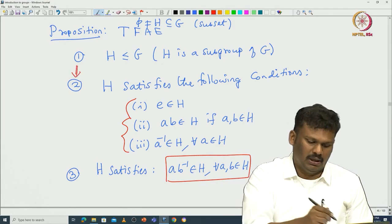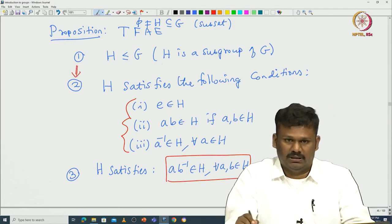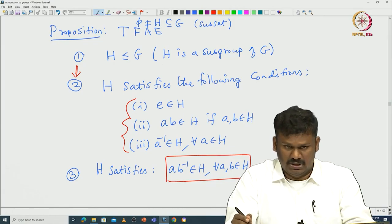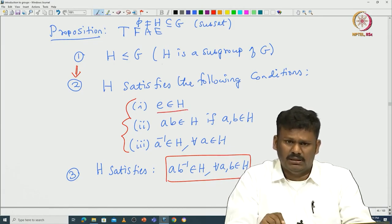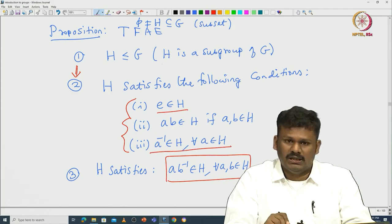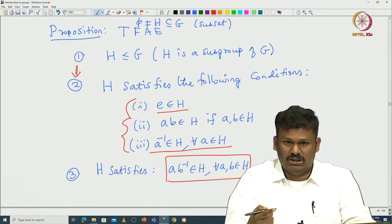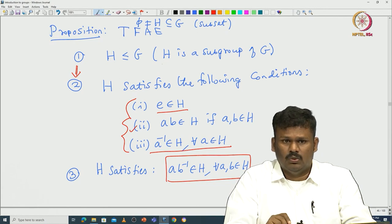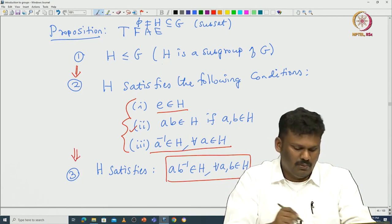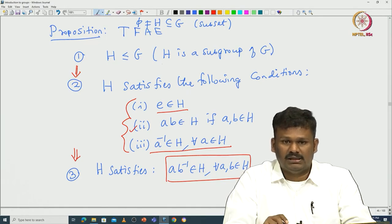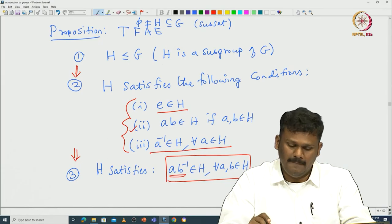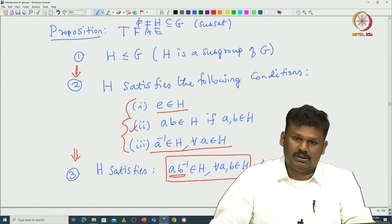Now 1 implies 2 is more or less easy from the definition. Once you have done the exercise that the identity of G is the same as the identity of H, and since the star restricted to H×H is a map from H×H to H, the second condition is also satisfied. If you think about 2 implies 3: given A, B in H, you have B inverse in H, and taking the product gives AB⁻¹ in H from condition 2.